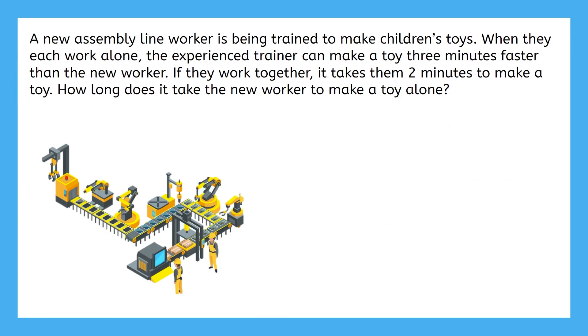Here's our last example, and it's a little more difficult than the others, but just keep in mind that general setup and it won't be too tough. This problem says a new assembly line worker is being trained to make children's toys. When they each work alone, the experienced trainer can make a toy three minutes faster than the new worker. If they work together, it takes them two minutes to make a toy. How long does it take the new worker to make a toy alone?